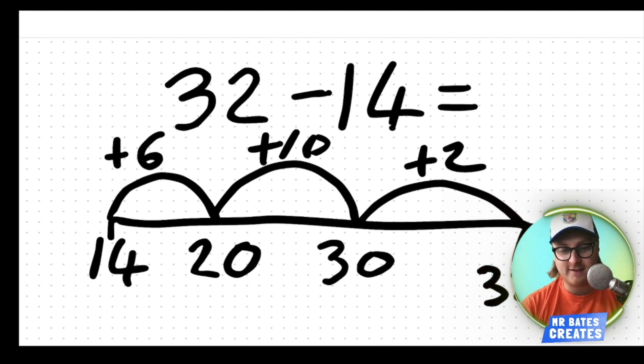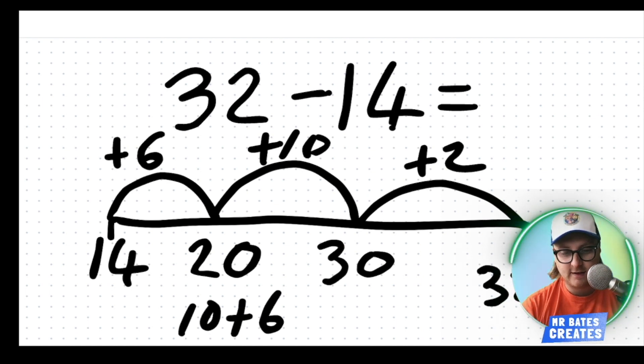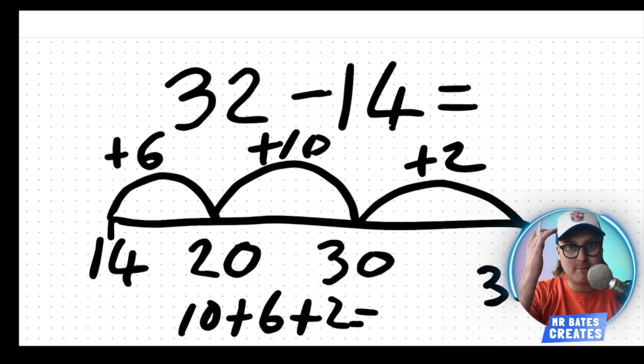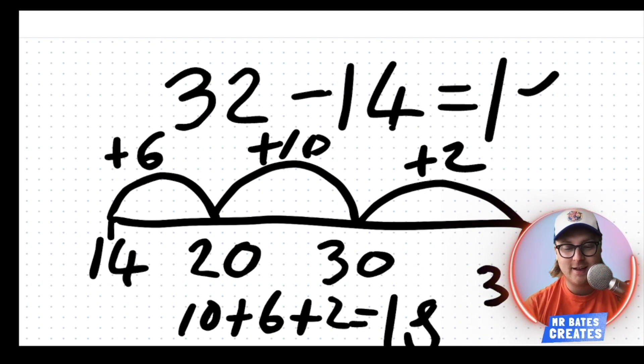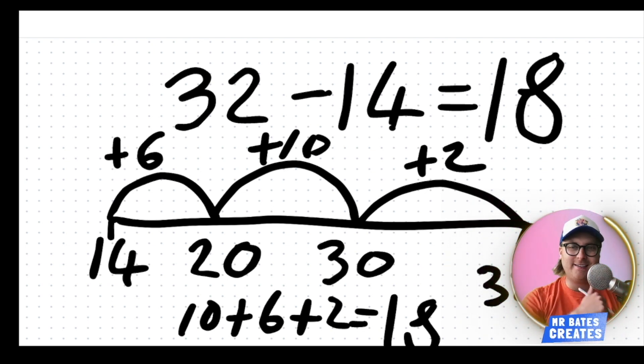Right, now we need to add them all up to get our answer. So, 10, add 6, add 2. Right, well, 10 in my head and then add on the 6 and the 2. That's going to give me 18. So, 32, take away 14 equals 18. Brilliant stuff.